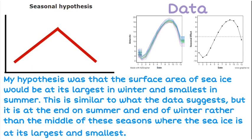Then my seasonal hypothesis: I predicted that it would be highest in winter and lowest in summer. That's similar to what we found, but actually it's the end of summer and the end of winter rather than the middle of those seasons where the sea ice was at its highest and lowest. And so that's what we want to put in for a conclusion.